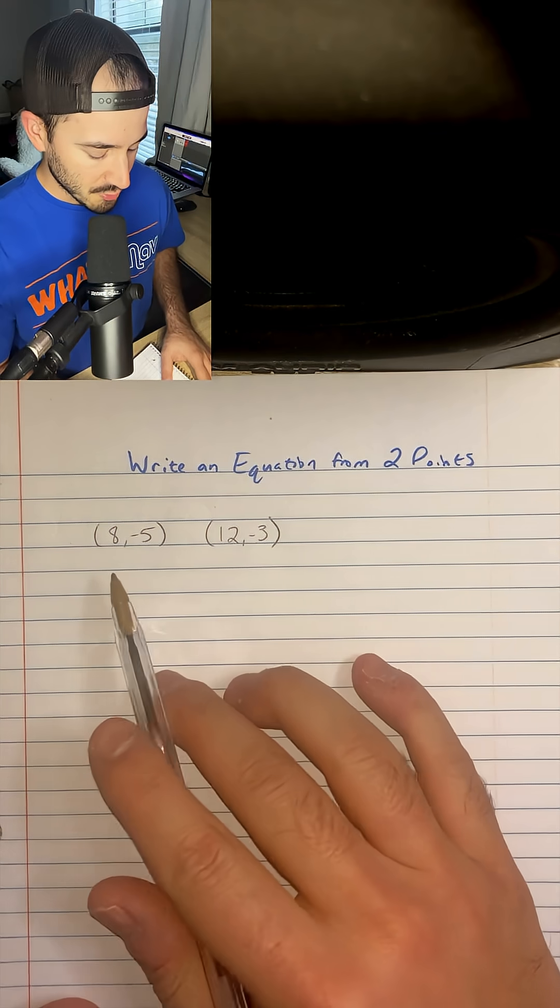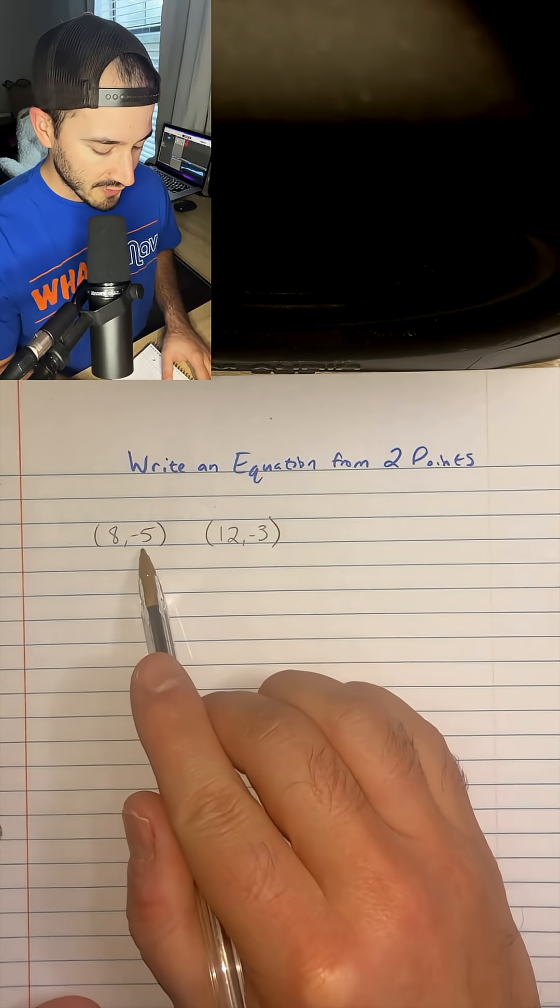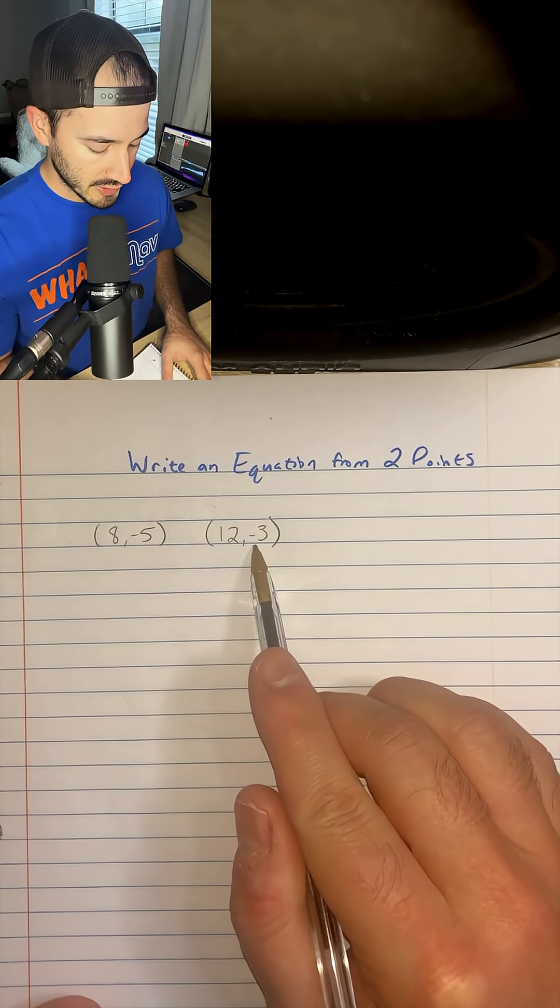If you're taking Algebra 1 this year and you don't know how to write an equation from two points, don't worry, I got you. So we're given the two points (8, -5) and (12, -3).